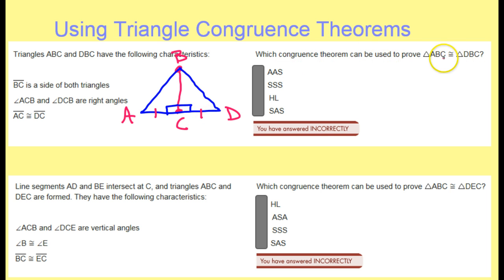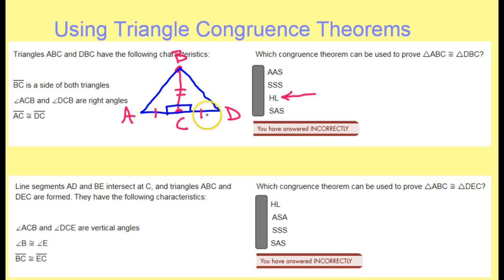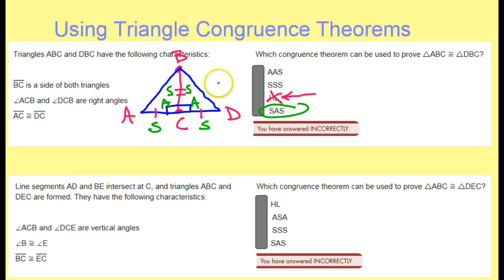So which congruence theorem can prove that these two triangles are congruent? Since this happens to be a right triangle with the 90 degrees, let's see if hypotenuse leg will work first. Well, they have a shared side, so that means these are congruent — that's a leg. The hypotenuse is over here, but then these sides are also congruent, but that's another leg. So hypotenuse leg is a no-go because it does not involve the hypotenuse. I have a side, angle, and a side for the left triangle, congruent to a side, an angle, and another side. So that's side, angle, side.